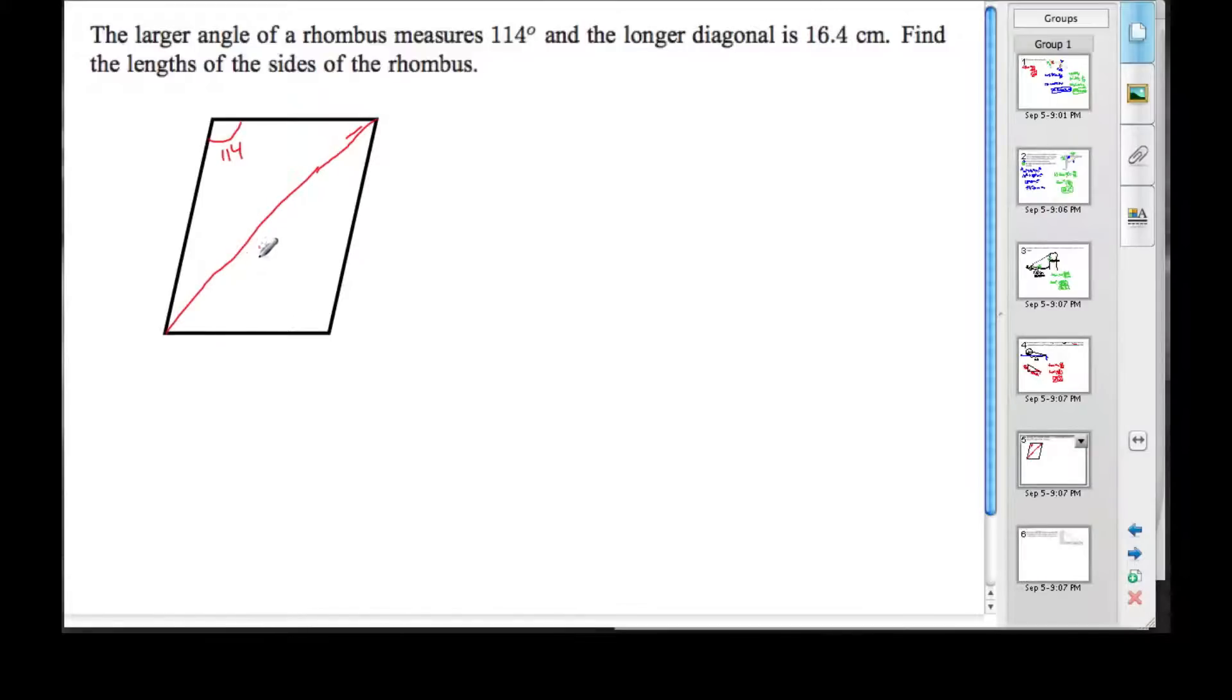Find the lengths of the sides of the rhombus, so we want to find this. Now, one of the properties of rhombuses is that if you take their diagonals, the diagonals meet at 90 degrees, so this, although it doesn't look like it, is 90 degrees.